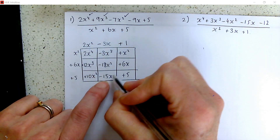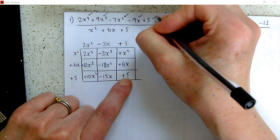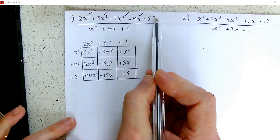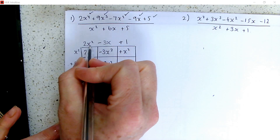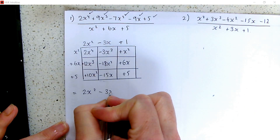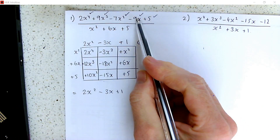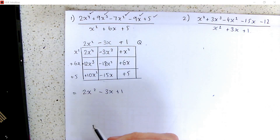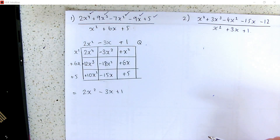We've got minus 15x plus 6x, which is minus 9x, and plus 5. So all of these boxes add up to the numerator — we've accounted for everything. So when we do this division, it gives us the quotient: 2x squared minus 3x plus 1. This quartic divided by this quadratic gives us this quadratic. Another way of writing it would be to say that the divisor multiplied by the quotient gives us that quartic.